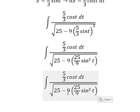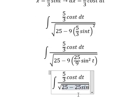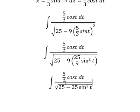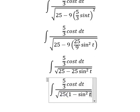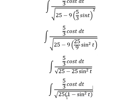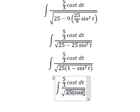So 9 and 9 we cancel. So 25 and 25 we can do factorization. So this one, that is cos² t.